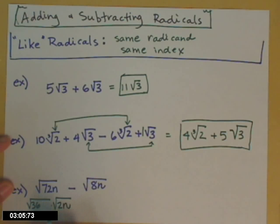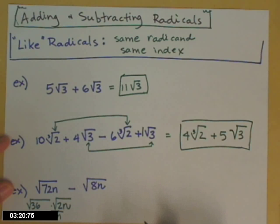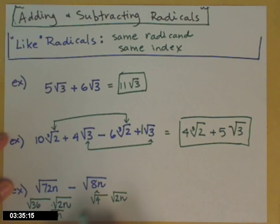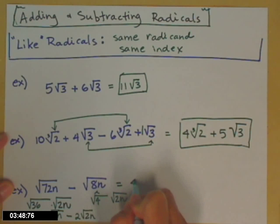That square root of 72n simplifies to 6 times the square root of 2n. The only way we can do something is if, when we simplify the square root of 8n, we also leave behind a radical 2n under the square root. The square root of 4 is 2, and the square root of 2n tags along. So we have 6 times the square root of 2n minus 2 times the square root of 2n, which altogether gives us 4 times the square root of 2n.